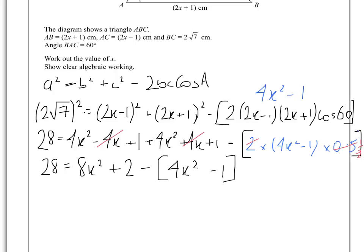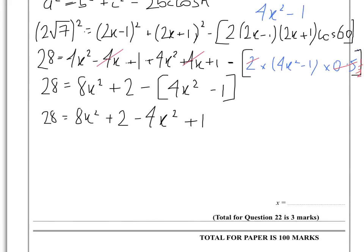So then when we rearrange that, we get 28 equals 8x squared plus 2 minus 4x squared plus 1, because of course this minus relates to the minus 1 as well. So when we simplify that, we're going to end up with 4x squared equals 28 minus 3, therefore 4x squared equals 25.